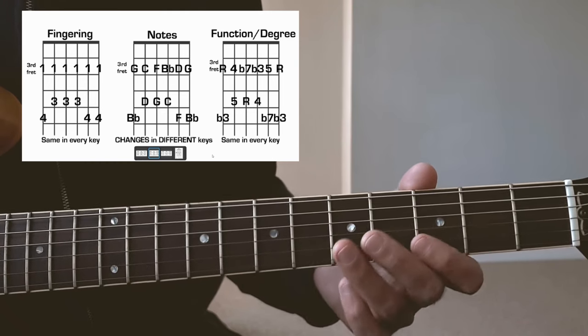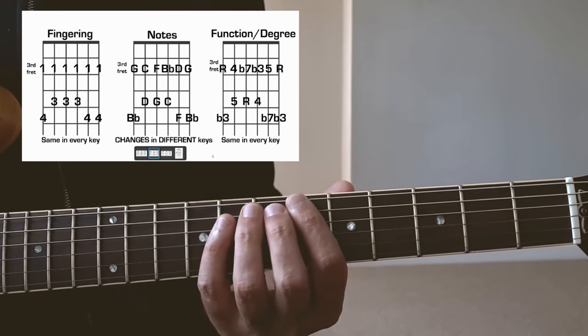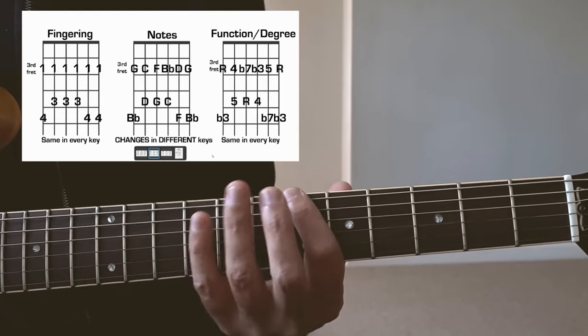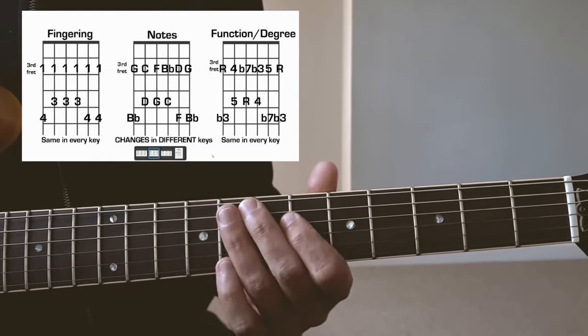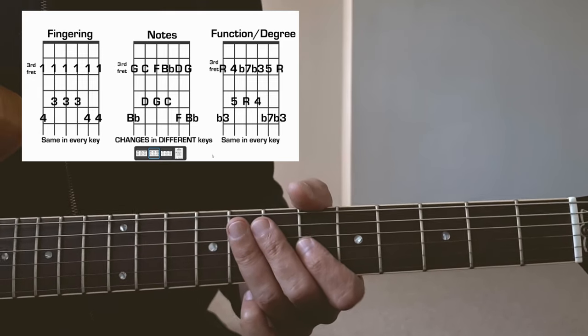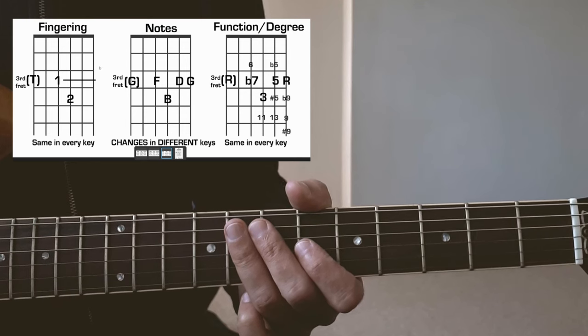So this is the sharp nine, 11th, and so on. Obviously same thing is true: if I move to B flat, the fingerings are still the same, but the notes will change, B flat D flat and so on, E flat F and so on. Function and the degree is still the same.